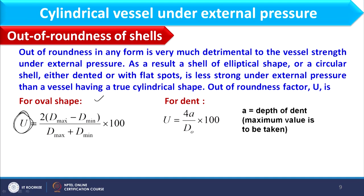Out of roundness refers to irregularity in geometry — for example an ellipsoidal vessel or a cylindrical vessel with dents. For an oval or cylindrical shape, out of roundness U is given as: U = 2(D_max − D_min) / (D_max + D_min) × 100. For a vessel with a dent, U = 4A / D₀ × 100, where A is the maximum depth of the dent.